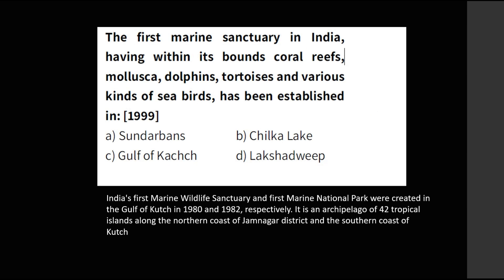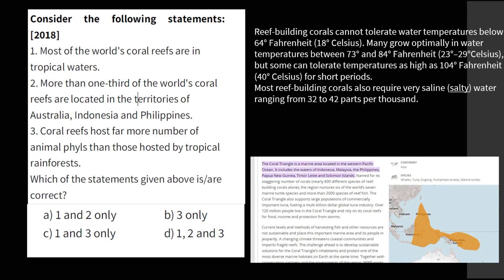The next question: 'The first marine sanctuary in India, having within its bounds coral reefs, dolphins, tortoise, and a variety of seabirds, has been established in —' The answer is Gulf of Kutch. Gulf of Kutch is very important for the Prelims examination. It is the first wildlife marine sanctuary and first marine national park, located in the Jamnagar district.